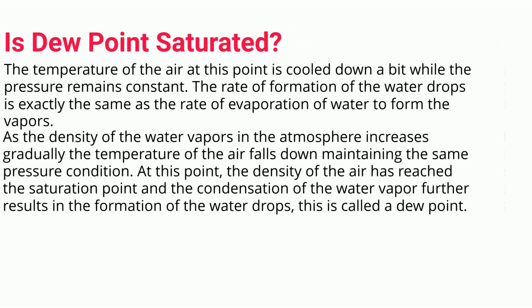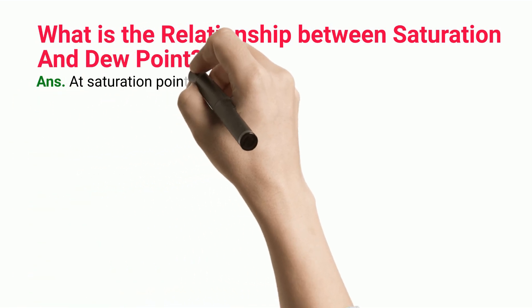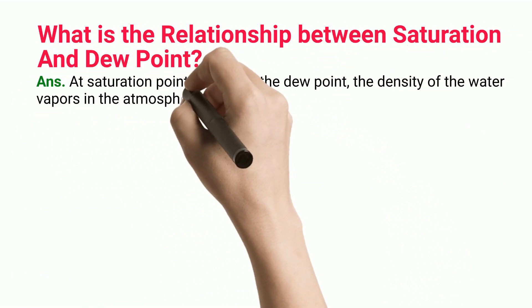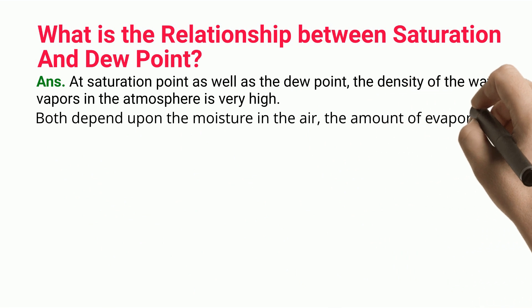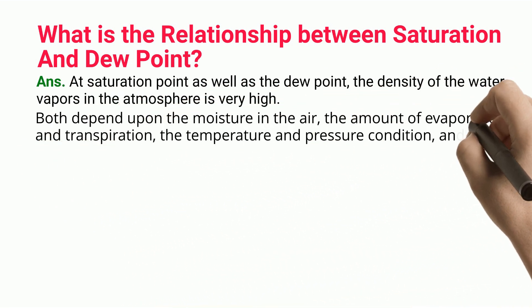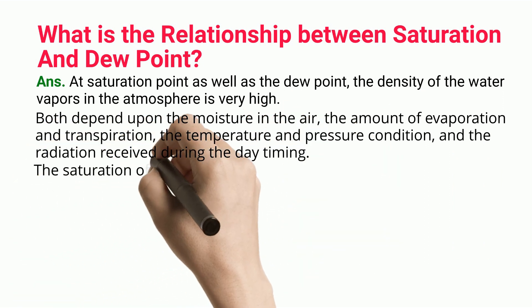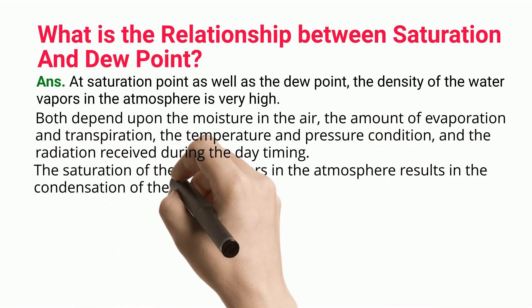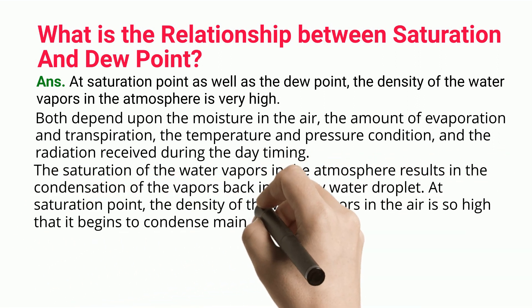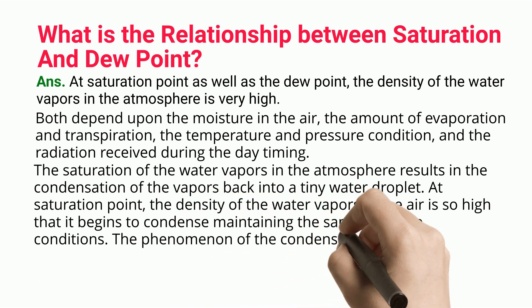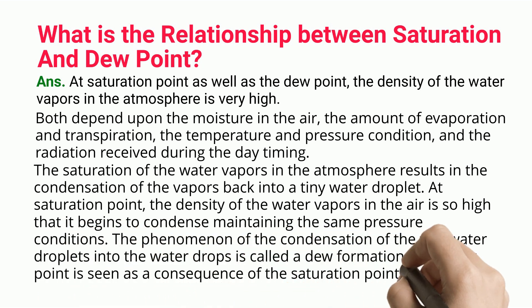What is the relationship between saturation and dew point? At both the saturation point and dew point, the density of water vapors in the atmosphere is very high. Both depend upon the moisture in the air, the amount of evaporation and transpiration, the temperature and pressure conditions, and the radiation received during daytime. The saturation of water vapors in the atmosphere results in condensation of vapors back into tiny water droplets. At the saturation point, the density of water vapors is so high that condensation begins at constant pressure.